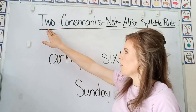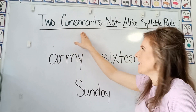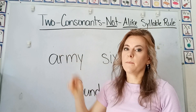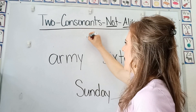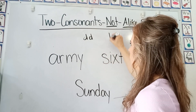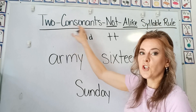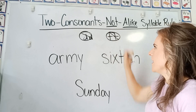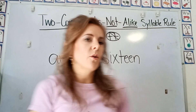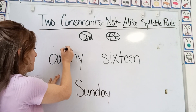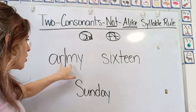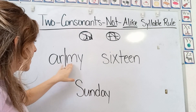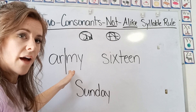Hello students, today we're going to talk about our two consonant not alike syllable rule. Before we talked about our double consonants where you had 'dd' or 'tt', but this one is our two consonants not alike syllable rule. You can divide a word between two consonants that are not alike.